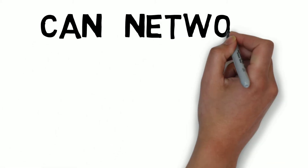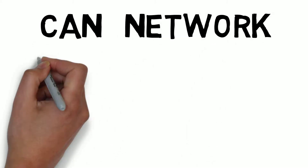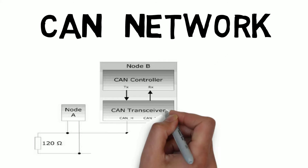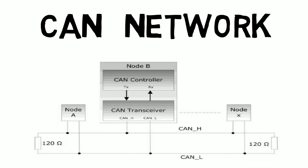Hello everyone. In this section we will see how the CAN network looks. The node is primarily called as an ECU, and the ECU has software components and a CAN controller.